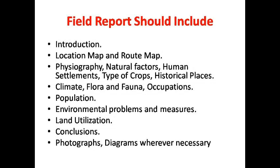Include human settlements — are you visiting a city or a village? How is the population — dense or sparse? What type of crops are grown there — are they seasonal crops? Are crops grown for two seasons or the whole year, and which specific crops? The crops depend on rainfall, soil, and climate. If you are visiting a historical place, the things you include in your field report will change accordingly.